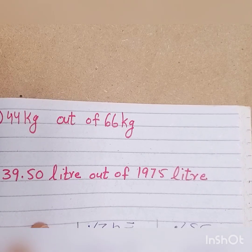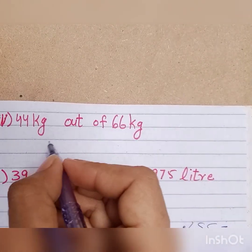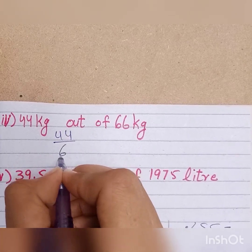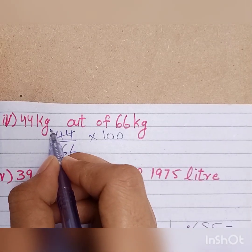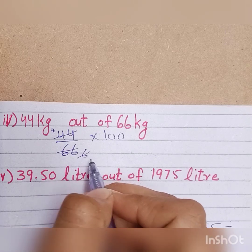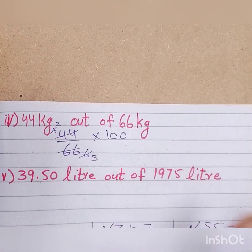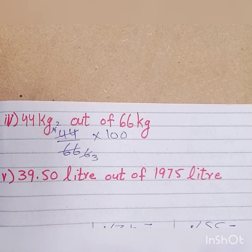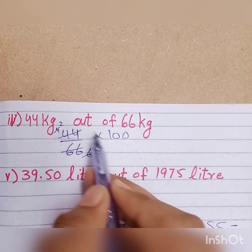The next part: we have 44 kg out of 66 kg. So we write 44 by 66 multiplied by 100. Using the 11 times table, 44 gives 4 and 66 gives 6. Then using the 2 times table, 6 gives 3 and 4 gives 2.